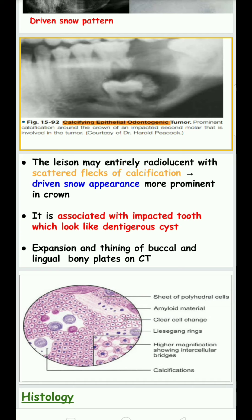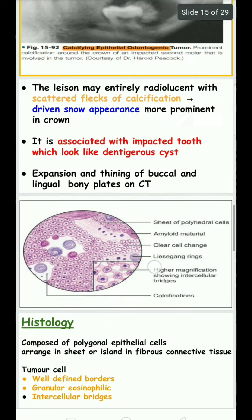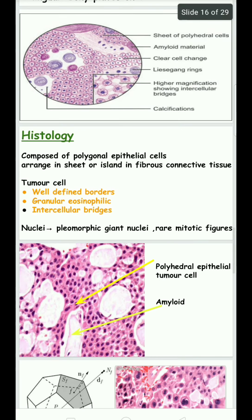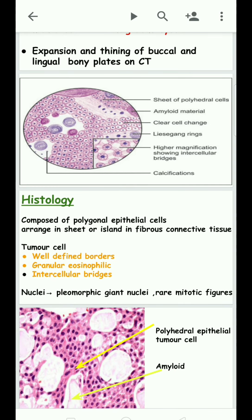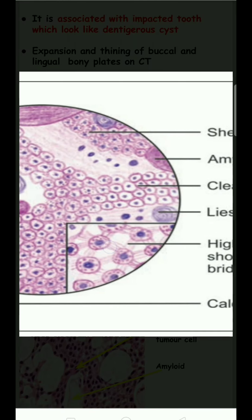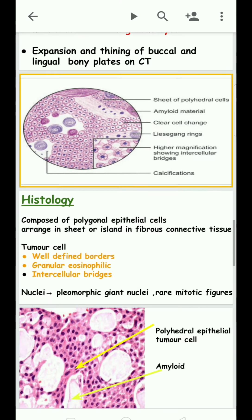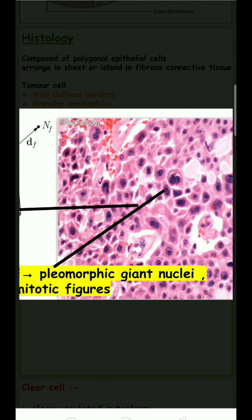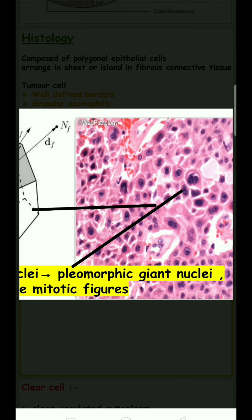There is expansion and thinning of the buccal and lingual bony plates on CT imaging. Histologically, it is composed of polygonal epithelial cells arranged in sheets or islands within fibrous connective tissue. Intercellular bridges will be seen.